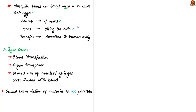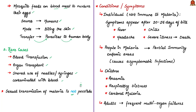This is how mosquitoes act as a vector by transferring the malarial parasite into the human body. In rare cases, malaria can also be transmitted through blood transfusion, organ transplant, or the shared use of needles or syringes contaminated with blood. However, sexual transmission of malaria is not possible. Malaria is an acute febrile illness, where acute febrile means severe fever-like conditions.